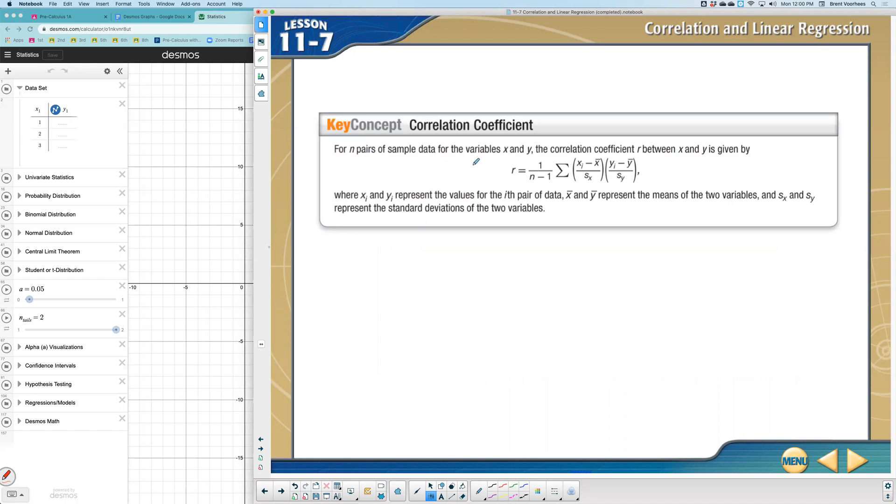It says for n pairs of sample data of the various variables X and Y, the correlation coefficient R between X and Y is given by this. And so really, however many samples you have, you have one divided by the samples minus one, times the sum. This is going to be any particular X value in a sample, minus the mean of the X data set, divided by the standard deviation of the X data set, times whatever the particular element of the Y, or the second data. So it's called bivariate, because there's two.